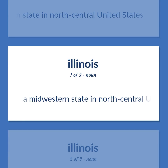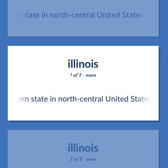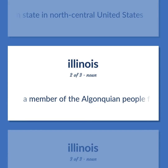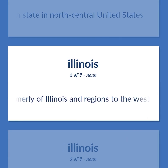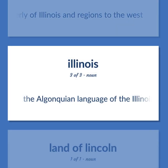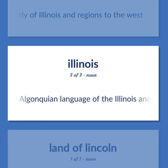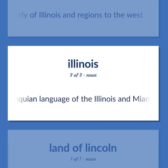Illinois: A Midwestern state in north central United States. A member of the Algonquian people formerly of Illinois and regions to the west. The Algonquian language of the Illinois and Miami.